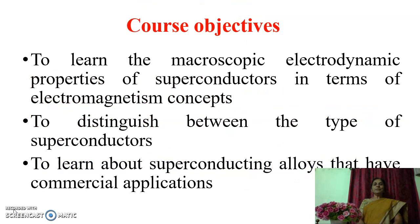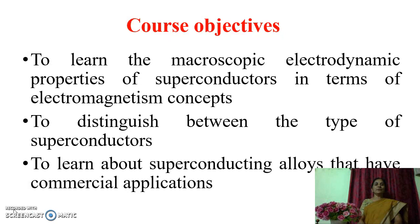The objectives of this course are to learn the macroscopic electrodynamic properties of superconductors in terms of electromagnetism concepts, to distinguish between the types of superconductors, and to learn about superconducting alloys that have commercial applications.